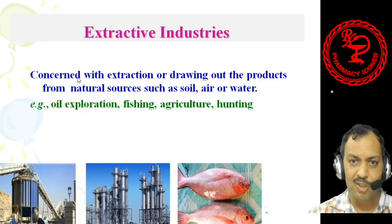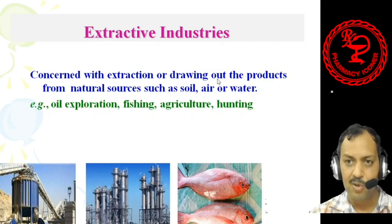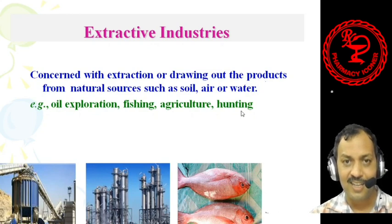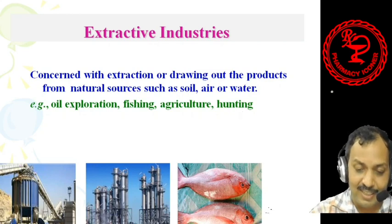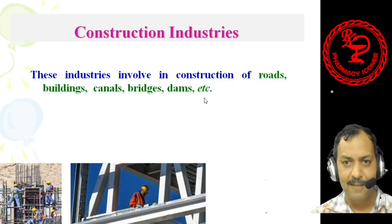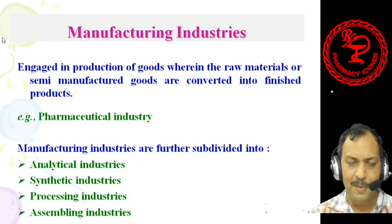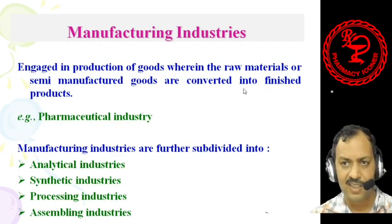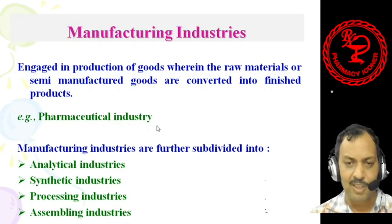Extractive industries are concerned with the extraction or drawing out of products from natural resources such as soil, air, or water — examples include oil exploration, fishing, agriculture, and hunting. Construction industries include the construction of roads, buildings, canals, bridges, dams, etc. Manufacturing industries engage in the production of goods wherein raw materials or semi-manufactured goods are converted into finished products — for example, the pharmaceutical industry.